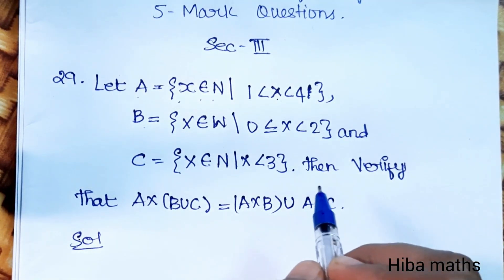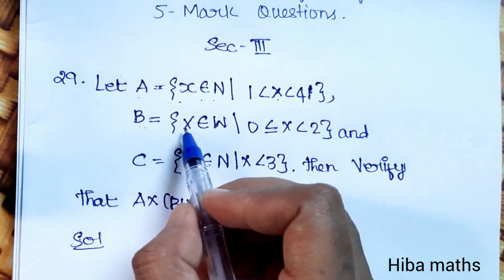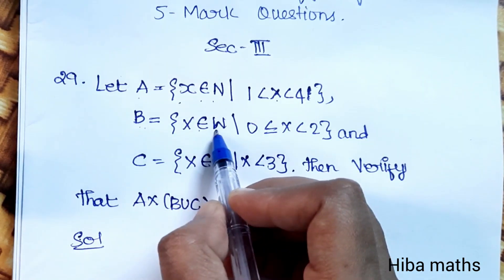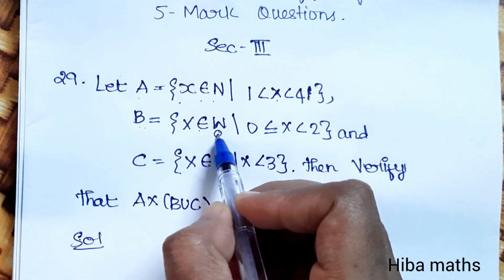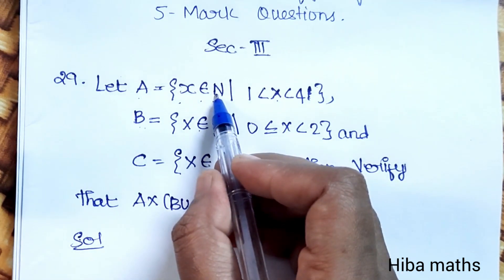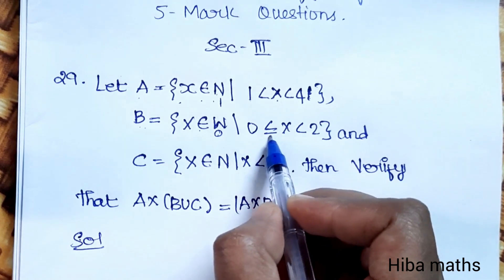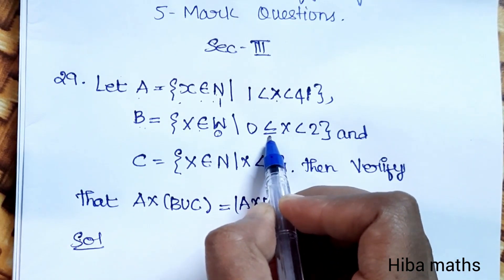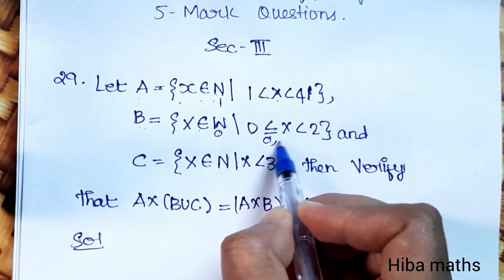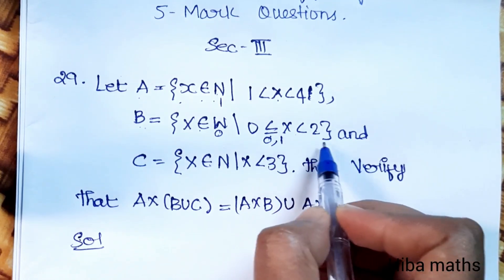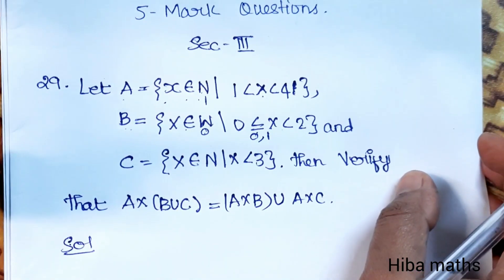If you make a mistake, note that the first set B: x is an element of W, where W is the set of whole numbers. Whole numbers start from 0. x is greater than or equal to 0 and less than 2, giving values 0 and 1.